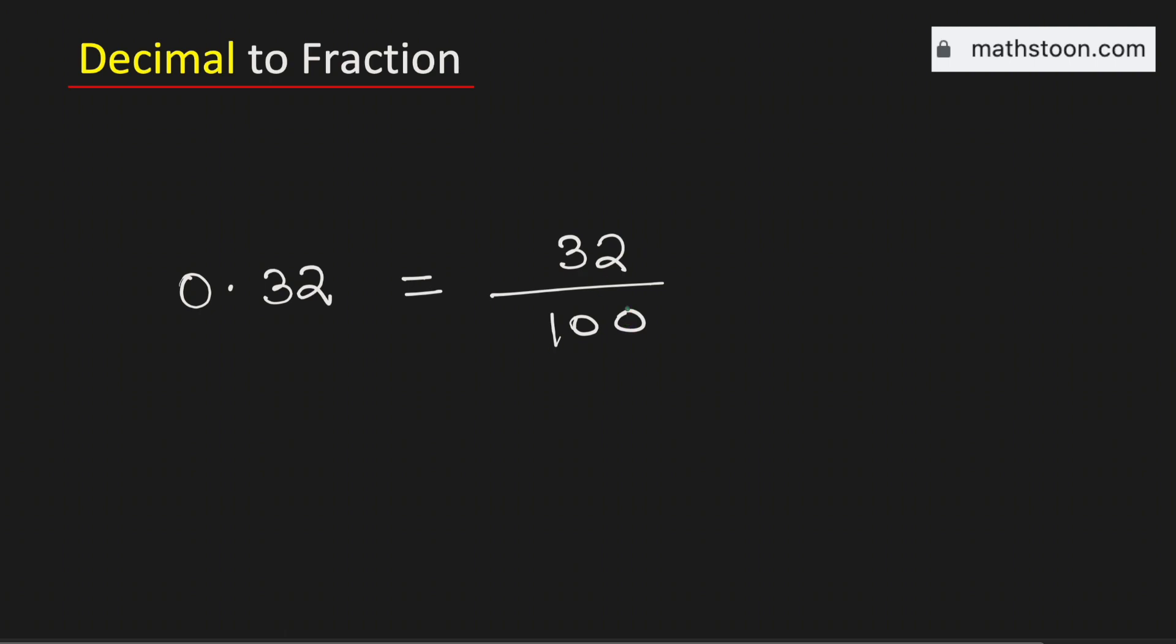See that 4 divides both these numbers. Dividing them by 4, we get 8 in the numerator and 25 in the denominator. So it equals 8 over 25.